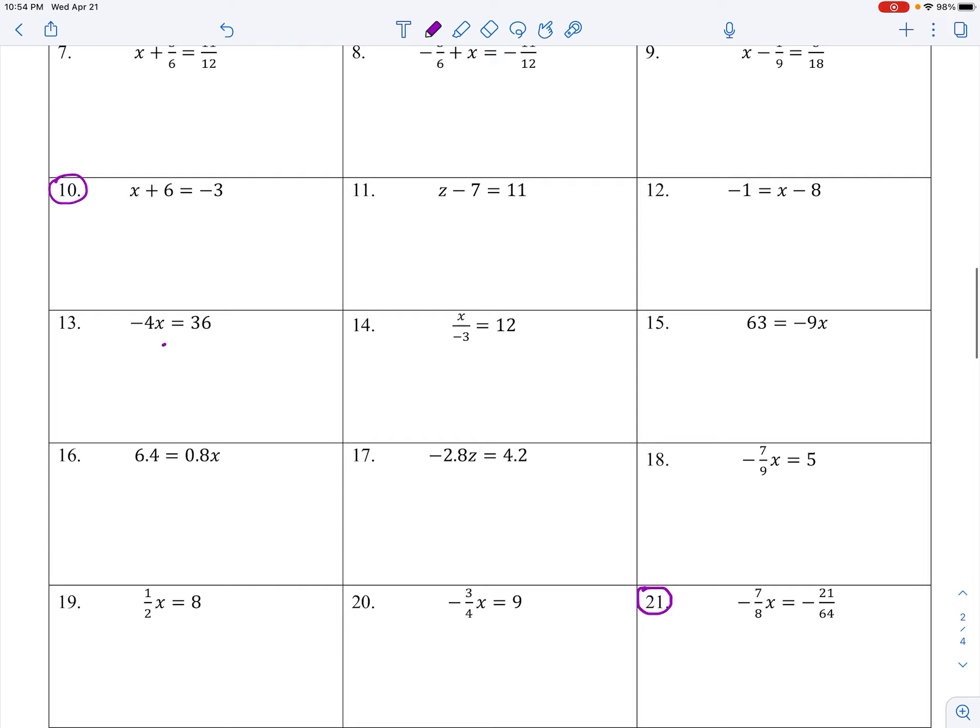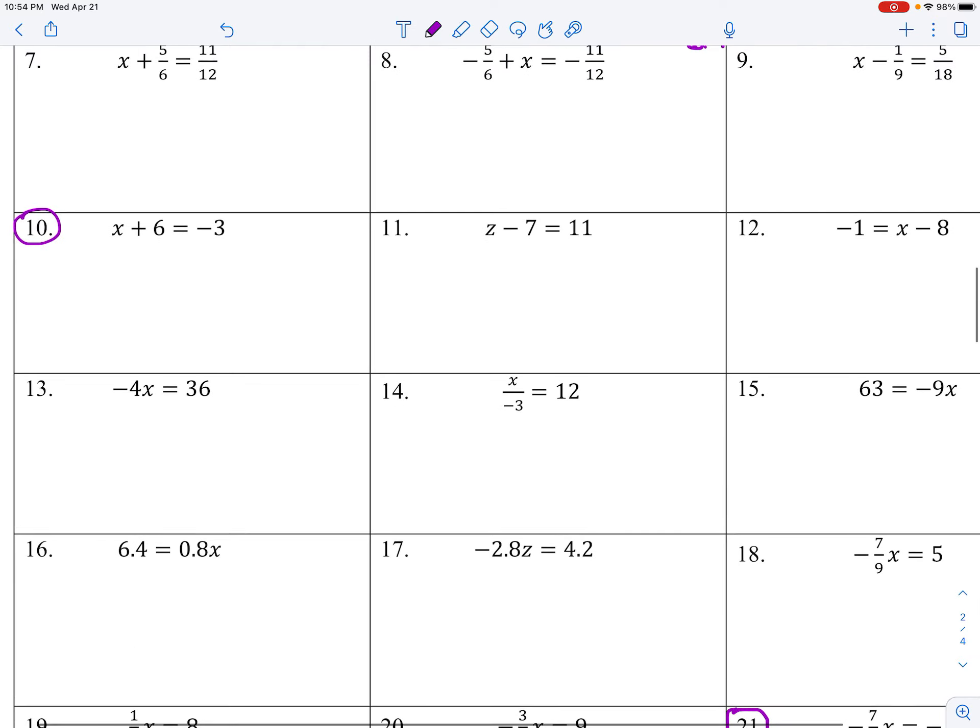Another one here, this number 10, x plus six equals negative three. Yes, maybe in your head you know that that's going to be negative nine. Negative nine plus six is negative three. But for right now the job is to show your thinking. It's not really to get to the right answer. It's to show your thinking and to communicate the operations needed to happen in order to isolate x.